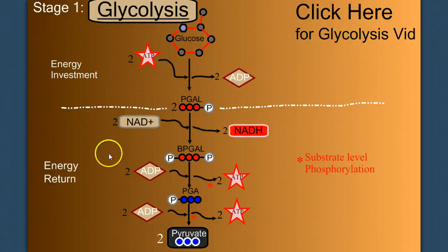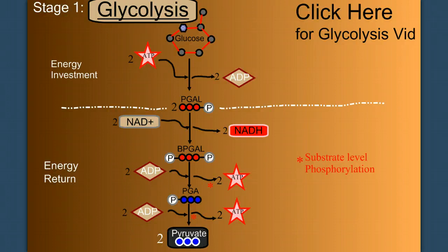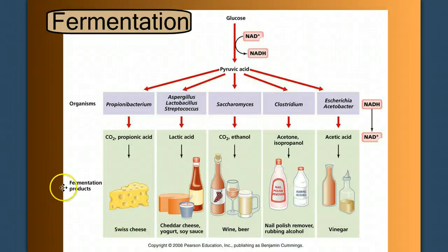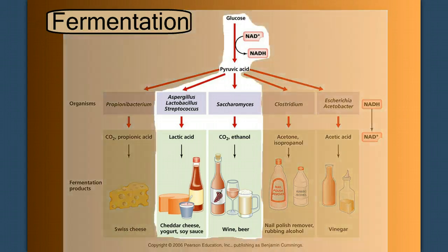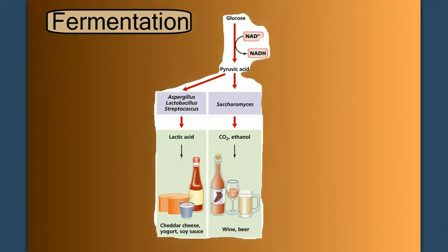If you want a more detailed description of how this occurs, go back to our video on glycolysis. Now at the end of glycolysis, we have two pyruvate. And then those two pyruvate can enter what we call fermentation. Fermentation comes in a lot of different variations. We can see all these different end products of the different types of fermentation. But for our purposes, we're going to focus on two: lactic acid fermentation and alcoholic fermentation.